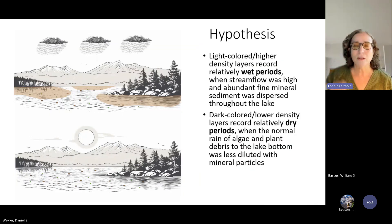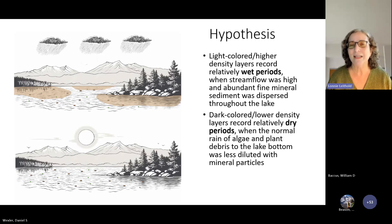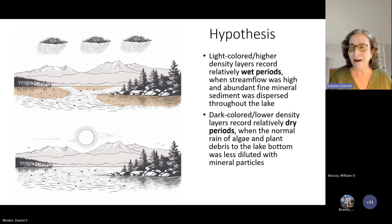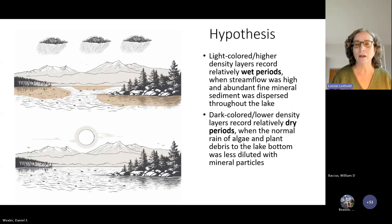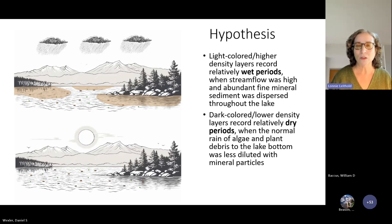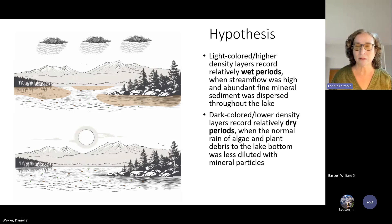Based on these results, we hypothesized that the light color layers represent relatively wet periods — wet decades when stream flow was relatively high and a lot of fine clay material was dispersed throughout the lake. Whereas the darker layers record drier periods when the normal rain of algae and plant debris to the lake bottom is less diluted with mineral particles.